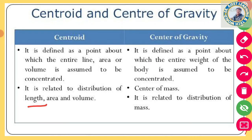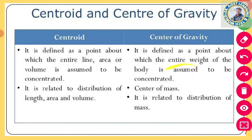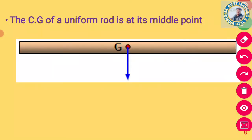Centroid is related to the distribution of length, area, and volume. Center of gravity is related to the distribution of mass. Center of gravity is defined as the point about which the entire weight of the body is assumed to be concentrated. So: centroid → entire area concentrated; center of gravity → entire weight concentrated.